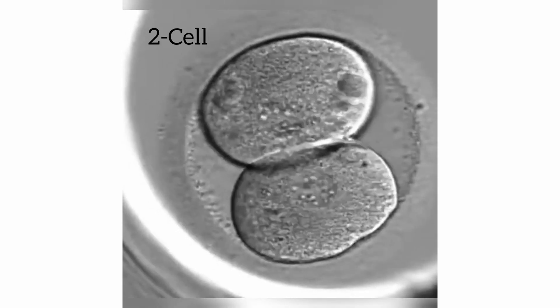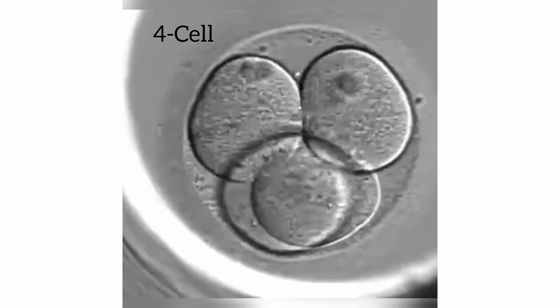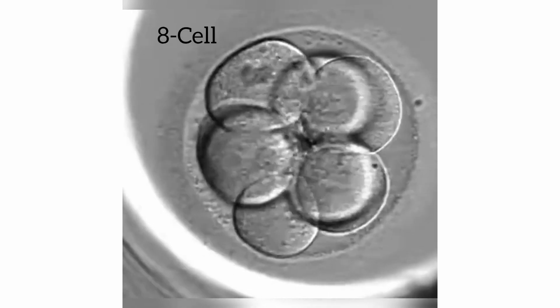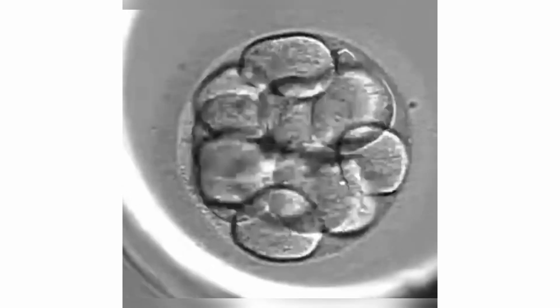The zygote divides to develop into an embryo, then into an organism. The entire information for the development is contained within the cells of the embryo, which communicate and coordinate with each other to execute a complex program to build the entire body.